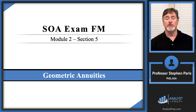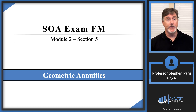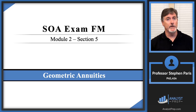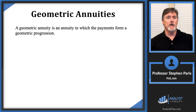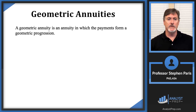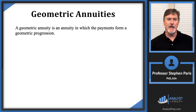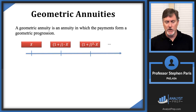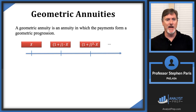In this video, we're going to cover geometric annuities. These are very common problems on the FM exam, so you need to know how to do these sorts of annuities. A geometric annuity is an annuity in which the payments form a geometric progression — meaning that to go from one payment to another, you're multiplying by the same amount.